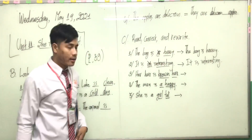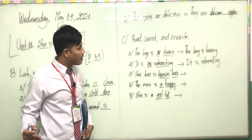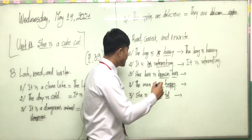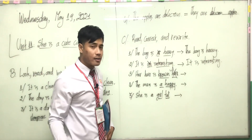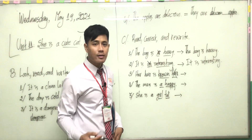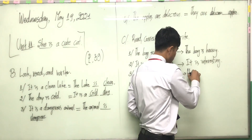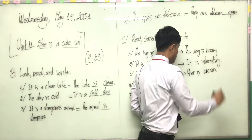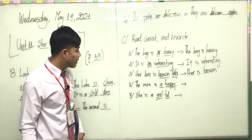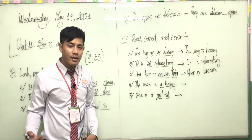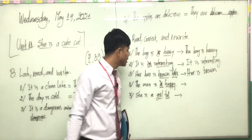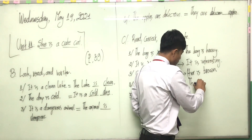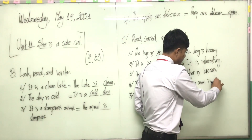Number three: 'Her hair is brown hair' — we don't need to repeat 'hair', we just say 'Her hair is brown.' That is enough. Number four: 'The man is a man is happy' — we don't need 'a man', we can just say 'The man is happy.'